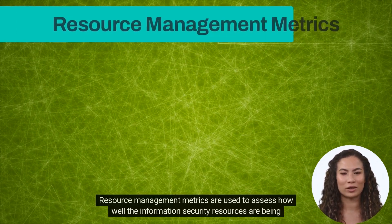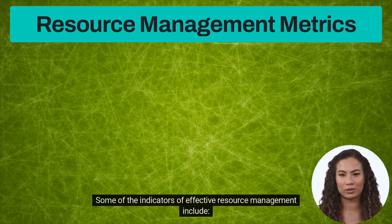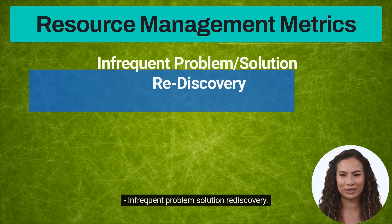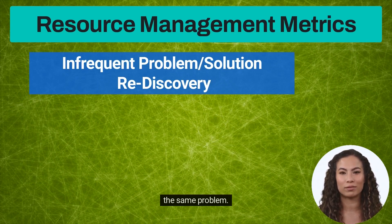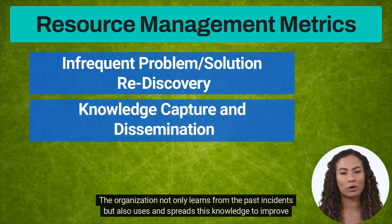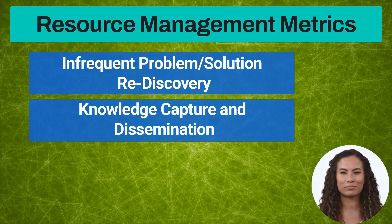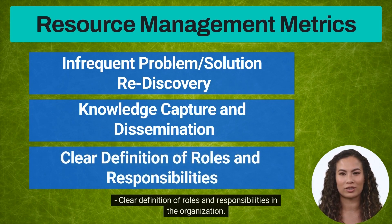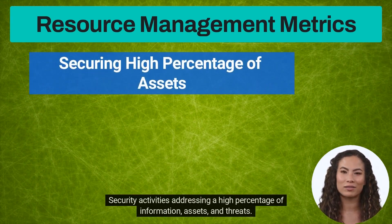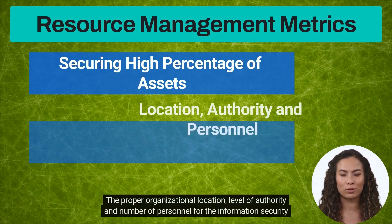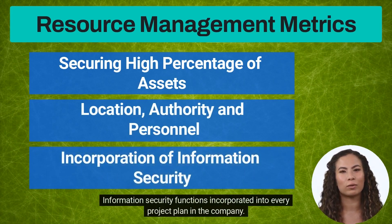Resource management metrics are used to assess how well information security resources are being managed. Some indicators of effective resource management include: infrequent problem solution rediscovery, meaning the same problem is not recurring; effective knowledge capture and dissemination; the organization learning from past incidents and spreading that knowledge to improve security; clear definition of roles and responsibilities; security activities addressing a high percentage of information assets and threats; the proper organizational location, level of authority, and number of personnel for the information security function; and information security functions incorporated into every project plan.